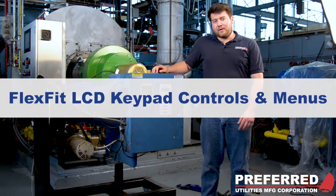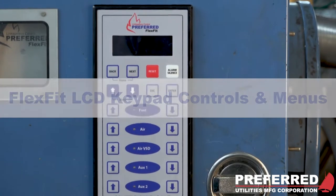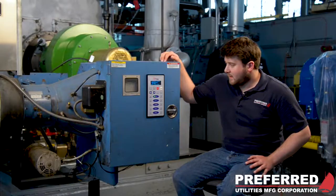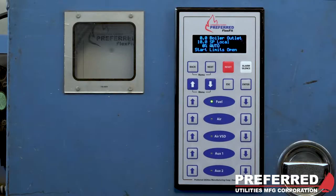In this video we will be going over the FlexFit LCD keypad controls as well as looking into the different menus and submenus. The first thing that you will see on your LCD keypad is the home screen. Here the home screen is set up for showing your boiler outlet, whether this is your pressure or temperature.